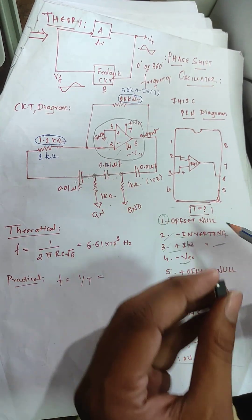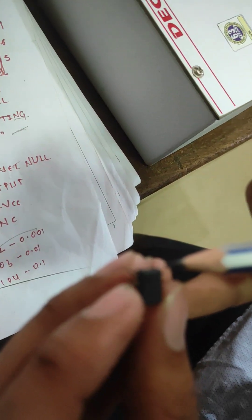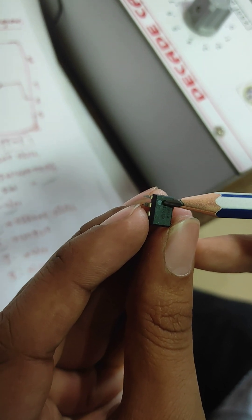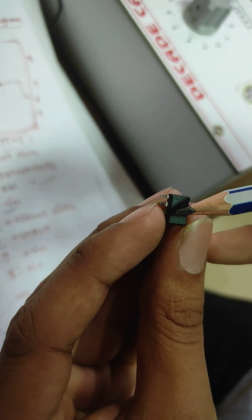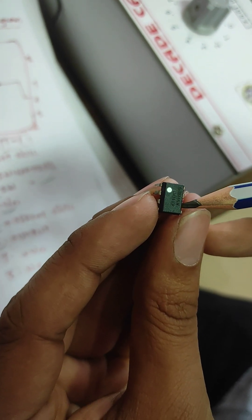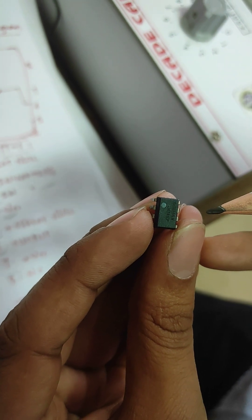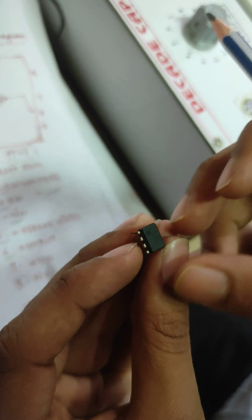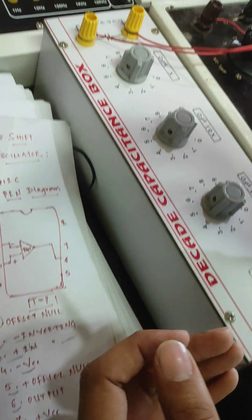Now let us see how to identify which is the first pin. You can observe the dark circle on the left side of the IC — from that you start counting: one, two, three, four, and then five, six, seven, eight. Pin 6 is always the output and that is standard. We are going to use this op-amp in this experiment. Let us insert it into the breadboard.